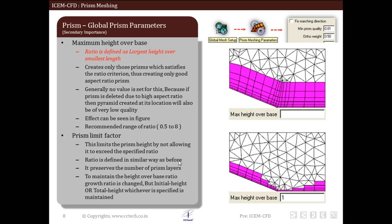Next parameter is prism limit factor. This sets limit for aspect ratio of prism and controls the height of prism element so that it satisfies the ratio criteria. This option is more useful than the previous one as it does not delete the prism elements. To maintain the height over base ratio growth rate is changed. Initial height or total height whichever is specified is maintained.